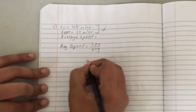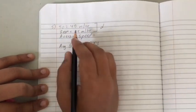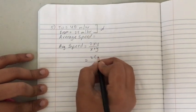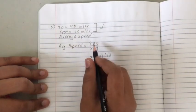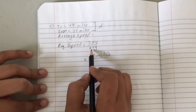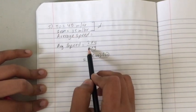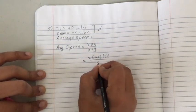So, let's substitute. Let's put 40 for x and 25 for y. So, 2 times 40 times 25 by x plus y, 40 plus 25, 65.